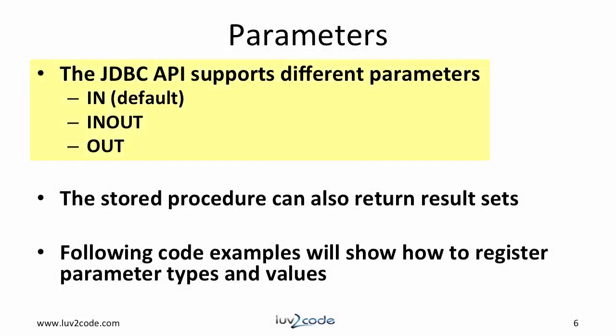The JDBC API supports different types of parameters. You can make use of the IN parameter, IN/OUT, and also OUT. The stored procedures can also return a result set. During the code examples in this video, I'll show you how to register different parameter types and also values.